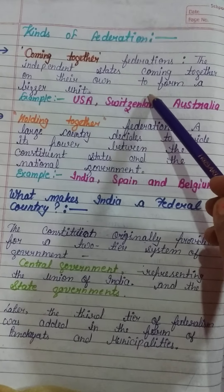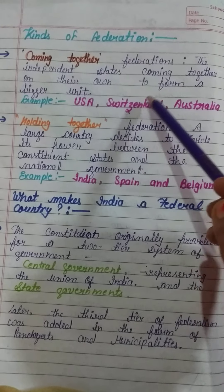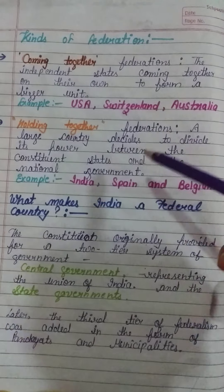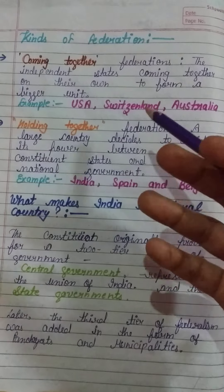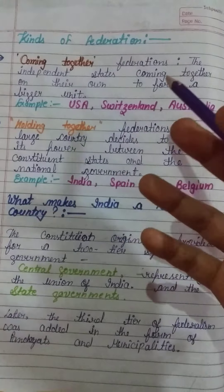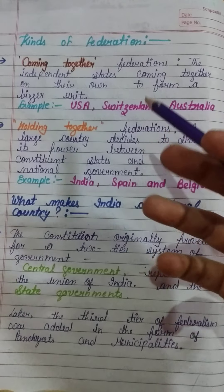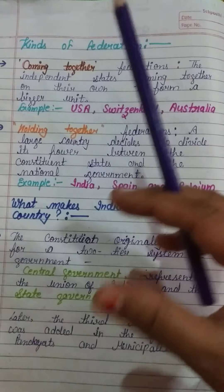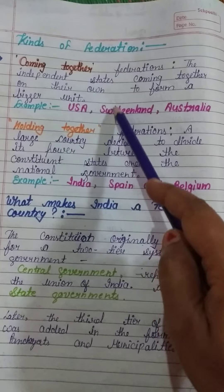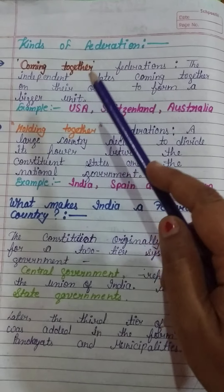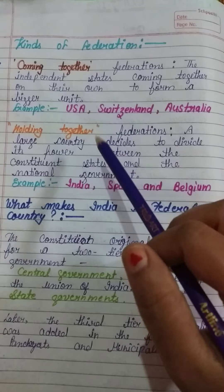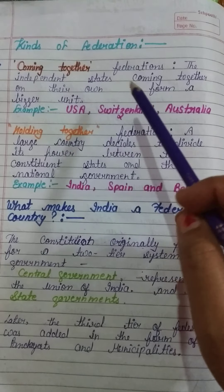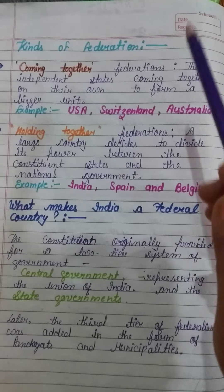In a Coming Together Federation, independent states come together on their own to form a bigger unit. Independent countries join to make a big unit. Examples include the USA — the United States of America, where many states came together to form a big unit — as well as Switzerland and Australia.